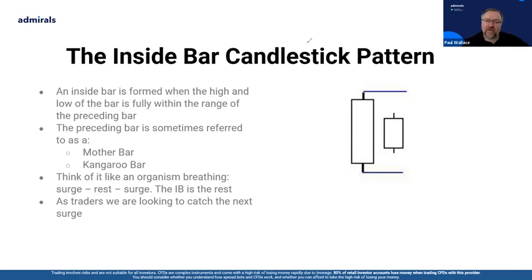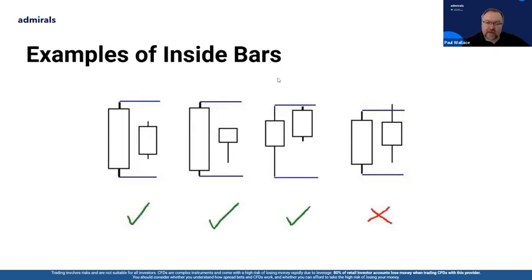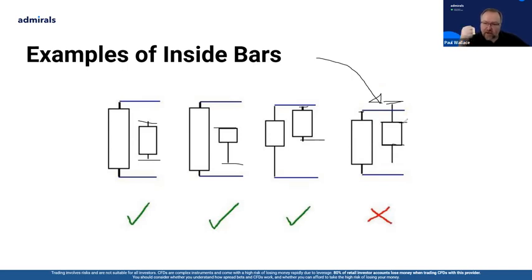We're looking to catch the next surge. Remember, the high and low has to be within the range of the preceding bar. This one here is not an inside bar because the high was higher than the previous bar's high. Some people like to work off the actual bodies of candlesticks — to me that's not the case. There are four elements of data that make up a candlestick: the open, the high, the low, and the close. They are all important, and the relationship between each is crucial to understand.